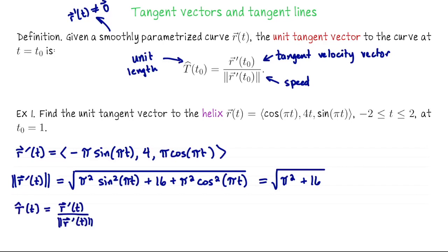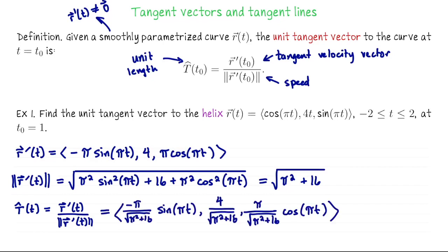So in general the unit length tangent vector to this parametrized curve is R' divided by the magnitude of R'. Plugging in from above, we take R' and divide it by √(π² + 16). At this point we could compute the unit tangent vector at any moment t. We're particularly interested in t₀ = 1. Plugging in 1, we get sin π = 0 in the first coordinate, and cos π = −1 in the third coordinate. So T-hat at t₀ = 1 is (0, 4/√(π²+16), −π/√(π²+16)). You can verify this is tangent to the curve and that its magnitude is 1.